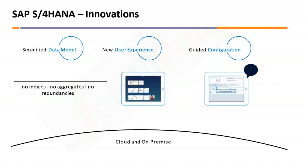There is a specific change for house bank configuration in S4HANA: the FI12 transaction used in ECC to create house banks is now disabled and obsolete. There are two options — implement two SAP notes to enable a new transaction, or use SAP Fiori to create house banks. For the training sessions, Fiori access should be provided — check with the support team for confirmation. All session content will be covered regardless.